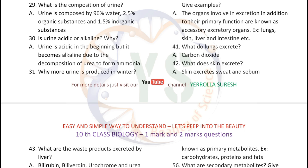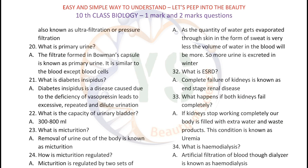Is urine acidic or alkaline and why? Urine is acidic in the beginning but it becomes alkaline due to the decomposition of urea to form ammonia. Why is more urine produced in winter? The quantity of water evaporated through the skin in the form of sweat is very less, so the volume of water in the blood will be more, and therefore more urine is excreted in winter.